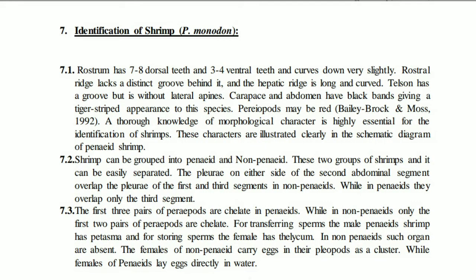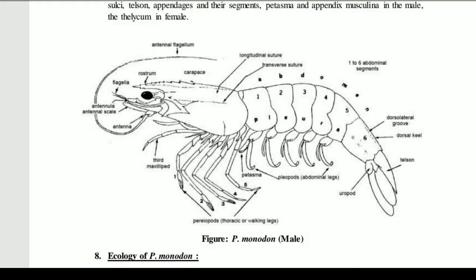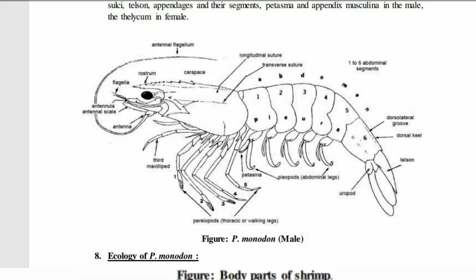Identification of Penaeus monodon: First, the rostrum has 7–8 dorsal teeth and 3–4 ventral teeth, and curves down very slightly. The rostrum has a groove behind it, and the hepatic ridge is long and curved. The dorsal is the upper side and the ventral is the lower side. The telson has a groove but is without lateral spines. The carapace and abdomen have black bands giving the tiger-striped appearance to the species. Periopods may be red.